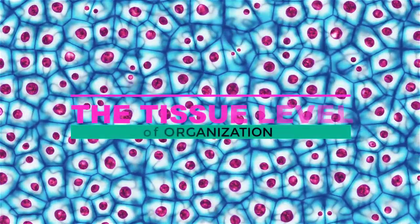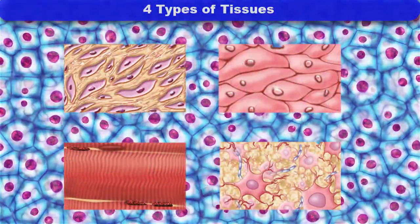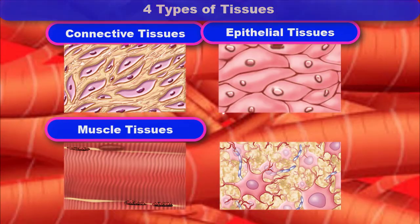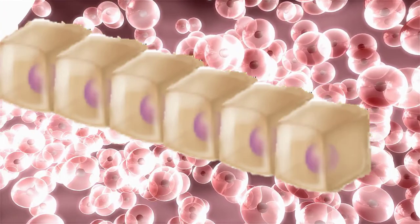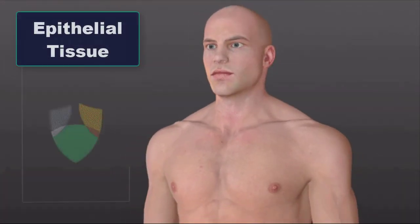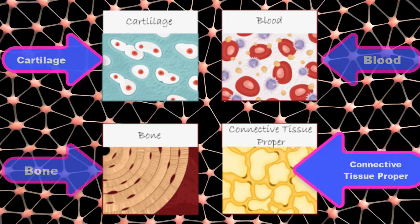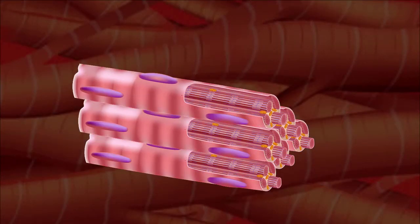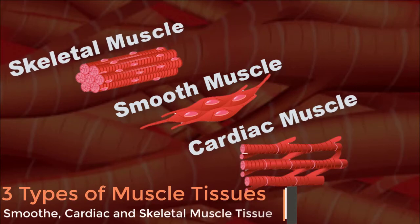This brings us to the tissue level of anatomical organization. There are four types of tissues found in the human body: epithelial tissues, connective tissues, muscle tissues, and nervous tissues. Epithelial cells come together to form epithelial tissues — the body's barriers. Connective tissue includes bone, cartilage, blood, and supportive tissues referred to as connective tissue proper. Muscle cells come together to form muscle tissue, of which there are three types: smooth muscle, cardiac muscle, and skeletal muscle tissue.